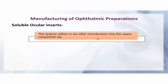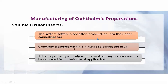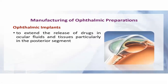The soluble ocular insert system softens within seconds after introduction into the upper conjunctival sac, causing some initial discomfort that is overcome as it softens. It gradually dissolves within one hour while releasing the drug. The advantage is that, being entirely soluble, it does not need to be removed from the site of application.